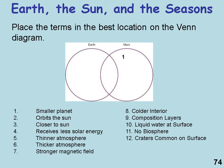Here's a Venn diagram comparing Earth and Mars. Mars is smaller; both orbit the sun; Earth is closer to the sun; Mars receives less solar energy; Mars has a thinner atmosphere; Earth has a thicker atmosphere; Earth has a stronger magnetic field; Mars has a colder interior; Earth has more compositional layers. Earth has liquid water on the surface — that's a key difference. Mars has no biosphere that we know of. And Mars has lots of craters on the surface, whereas Earth's have been eroded away.